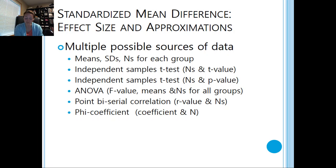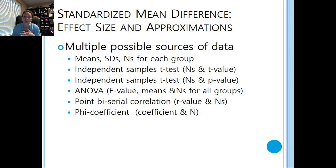The best possible scenario is having means, standard deviations, and the n's for each group. We could also compute it from an independent samples t-test if we have the n's and the t-value, or the n's and the p-value. If we had an ANOVA with the F-value, means, and n's for all groups, we could also estimate an effect size. Additionally, a point-biserial correlation or a phi coefficient could also be used.